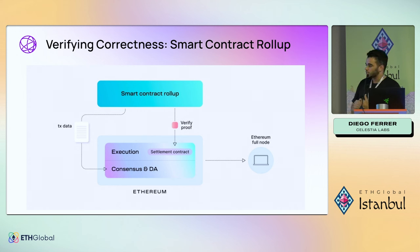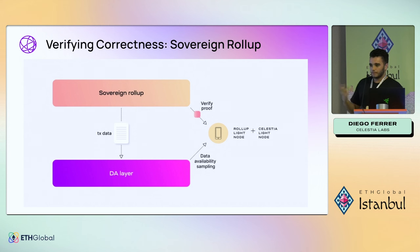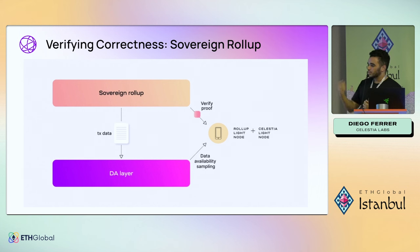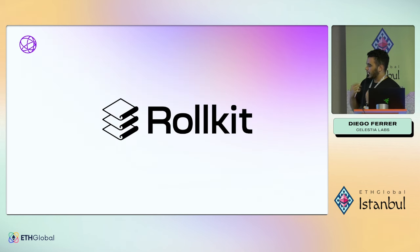Compared to a traditional smart contract rollup, which posts data to a chain like Ethereum and settles through a smart contract — handling disputes for an optimistic rollup or validity proofs for a ZK rollup — a sovereign rollup doesn't have a smart contract to talk to since Celestia doesn't have smart contracts. Instead, verification of the rollup's state is performed through fraud proofs or validity proofs relayed peer-to-peer.